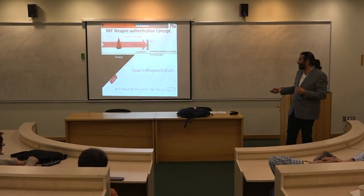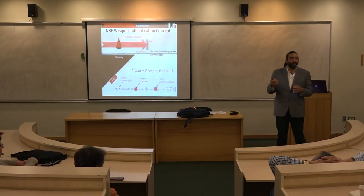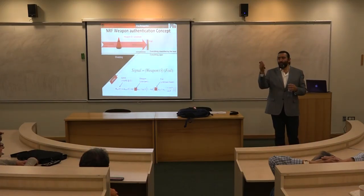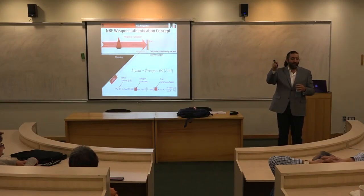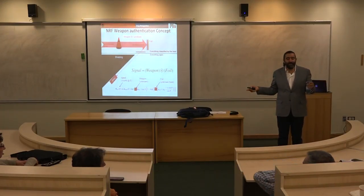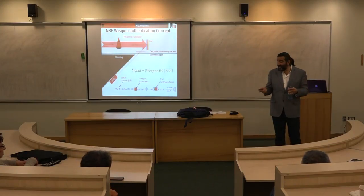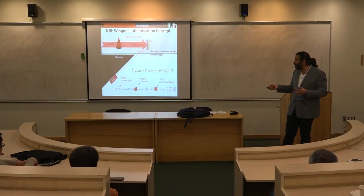Another way to think about this — this is actually the formula to explain it. This is your signal. This is the part that depends on the weapon itself. This is the part that depends on the foil itself. Think of this as one equation with multiple unknowns. From school mathematics, if you have x plus y equals 10, and your teacher asks what is x — x can be anything from minus infinity to plus infinity. One equation with two unknowns.